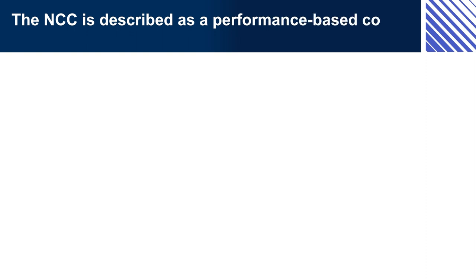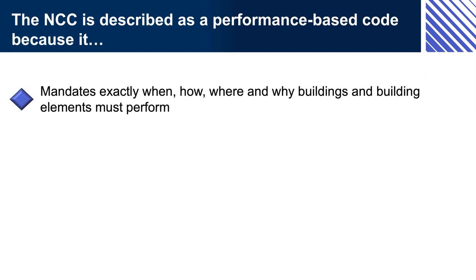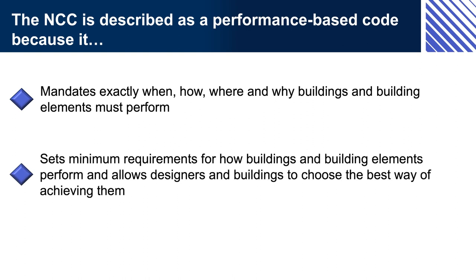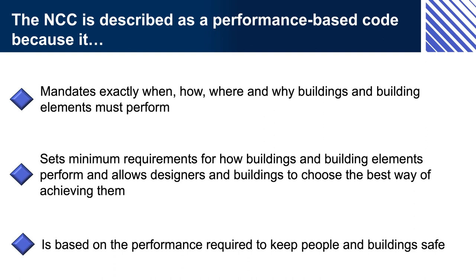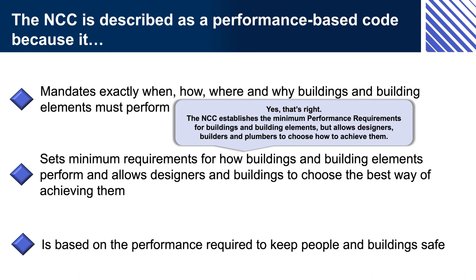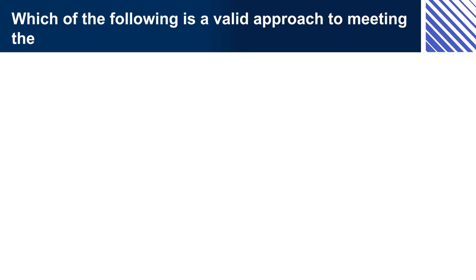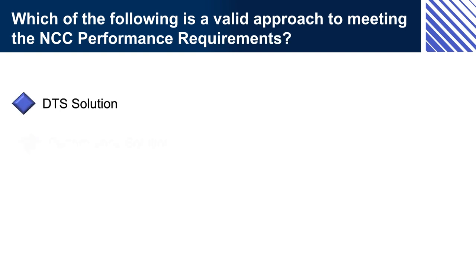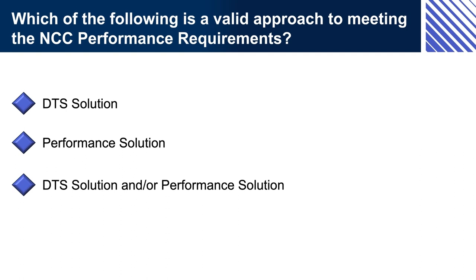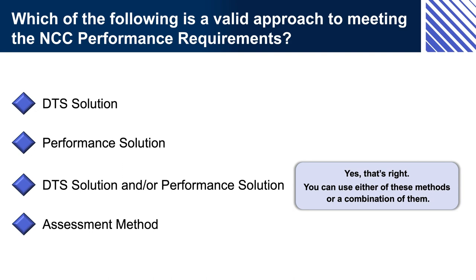The NCC is described as a performance-based code because it: (A) mandates exactly when, how, where and why buildings and building elements must perform; (B) sets minimum requirements for how buildings and building elements perform and allows designers and builders to choose the best way of achieving them; or (C) is based on the performance required to keep people and buildings safe. The correct answer is B — the NCC establishes the minimum performance requirements for buildings and building elements but allows designers, builders and plumbers to choose how to achieve them for each individual building. Which of the following is a valid approach to meeting the NCC performance requirements? DTS solution and/or performance solution — you can use either of these methods or a combination of them.